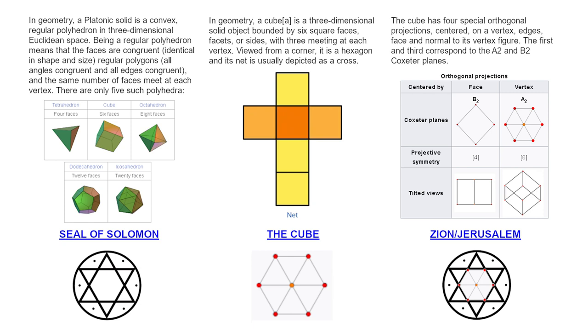Revelation 21 verses 12-13: The twelve gates were twelve pearls. Each gate was made from a single pearl. The gates in the north wall are named for Reuben, Judah, and Levi. Those in the east wall, for Joseph, Benjamin, and Dan. Those in the south wall, for Simeon, Issachar, and Zebulun. And those in the west wall are named for Gad, Asher, and Naphtali. Ezekiel 48 verses 31-34.